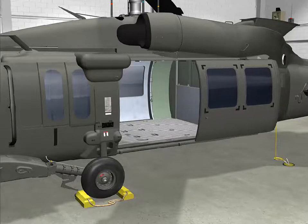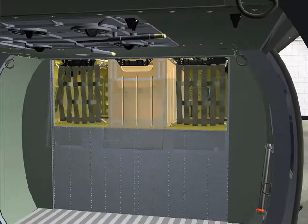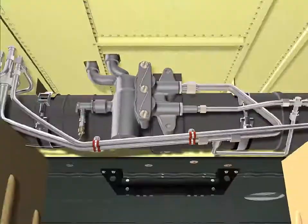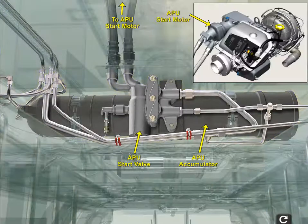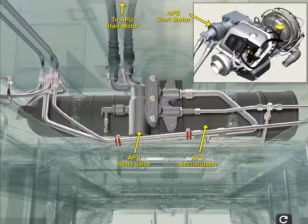The APU Hydraulic Start System. The hydraulic accumulator in the aft mid-section cabin ceiling provides the hydraulic pressure used to drive the APU starter. A hydraulic accumulator is a pressure storage device in which non-compressible hydraulic fluid is held under pressure by compressed gas or nitrogen.